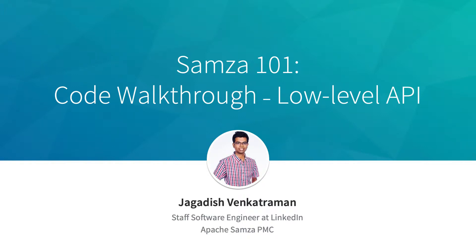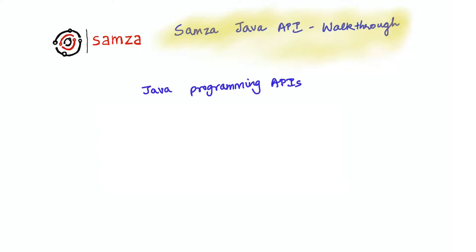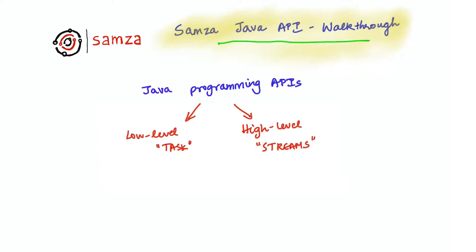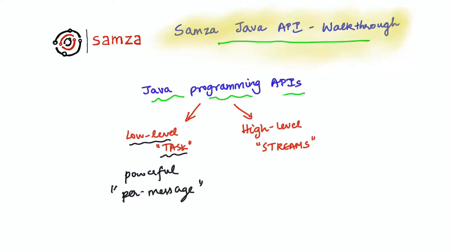In this video, we'll do a code walkthrough of Samza's Java APIs and look at actual examples. Samza supports two Java APIs for building advanced stream processing applications. We have the low-level API, or the Task API, which is really powerful because it is per-message-based and allows for greater control of processing logic at the level of an individual message. There is also the high-level API, or the Streams API.